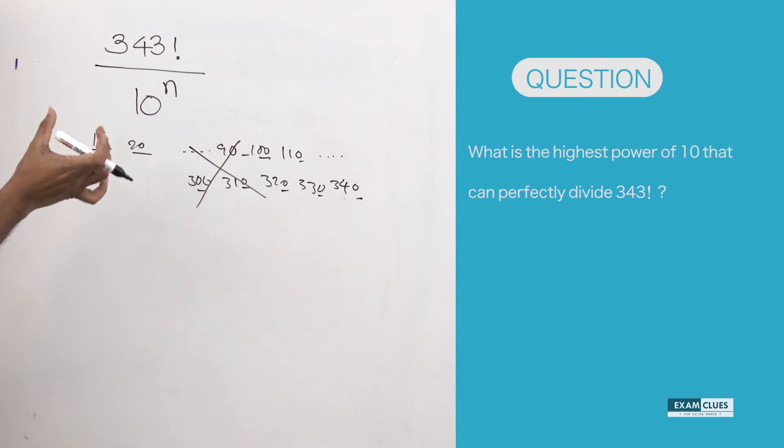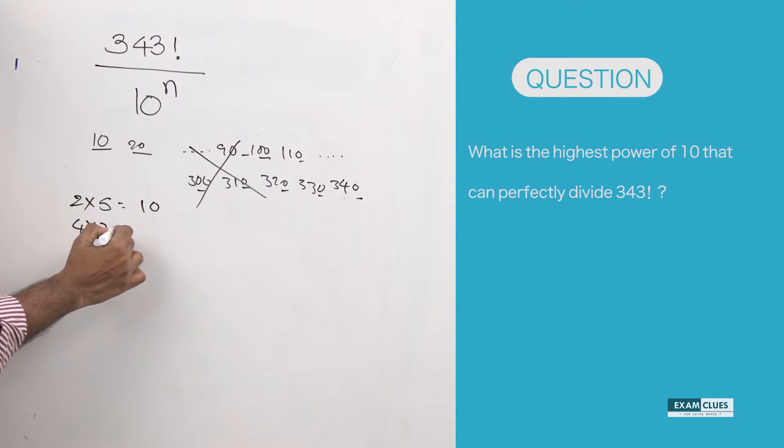The tricky part here is there are other numbers that, when multiplied, yield zeros in the units place. Like 2 times 5 you get 10, or 4 times 25 you get 100—there you're getting extra two zeros.